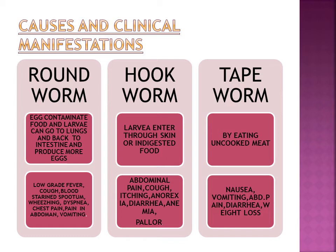This is the cause of Roundworm infestation. What are the clinical manifestations? You can see low grade fever, cough, blood-strained sputum, wheezing, dyspnea, chest pain, pain in the abdomen and vomiting. This is about Roundworm.